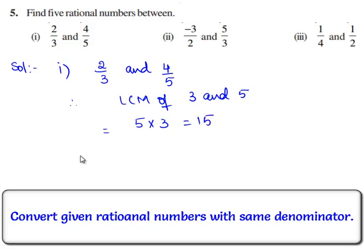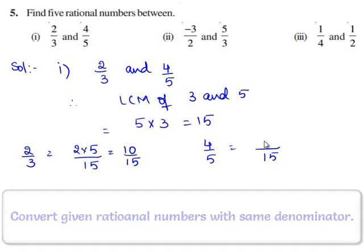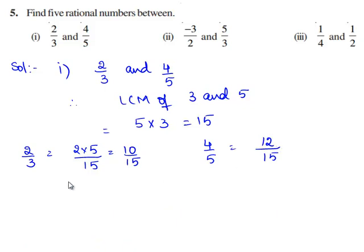Now we express each rational number with the denominator as LCM. 2/3 is written as: 3 × 5 = 15, so 2 × 5 = 10/15. And 4/5 is written as: 5 × 3 = 15, so 4 × 3 = 12/15. Now we shall find equivalent rational numbers for 10/15 and 12/15.